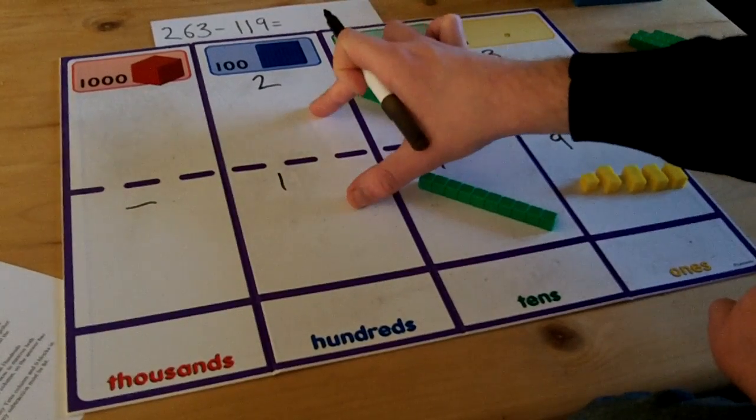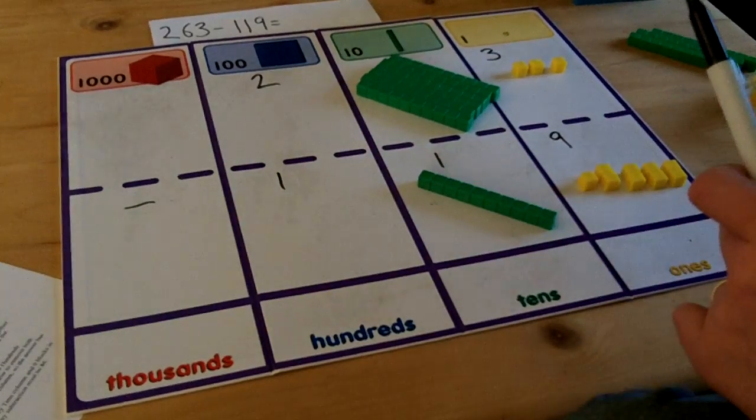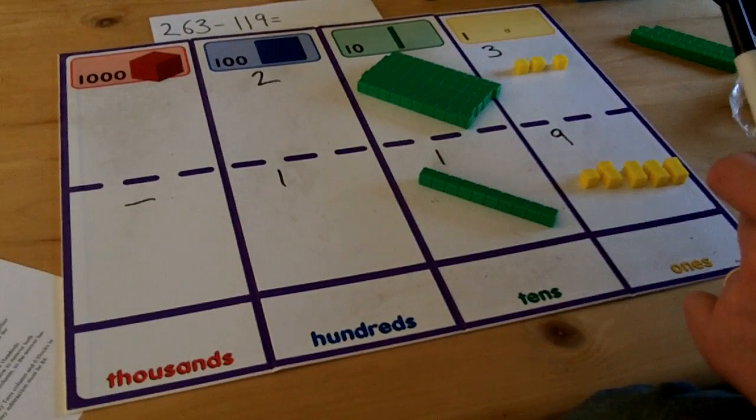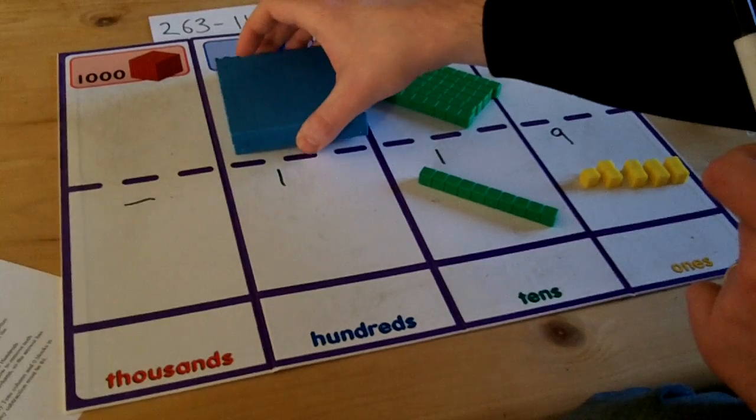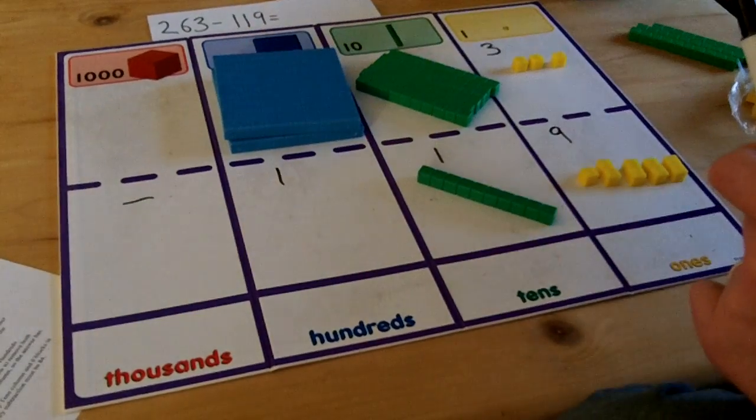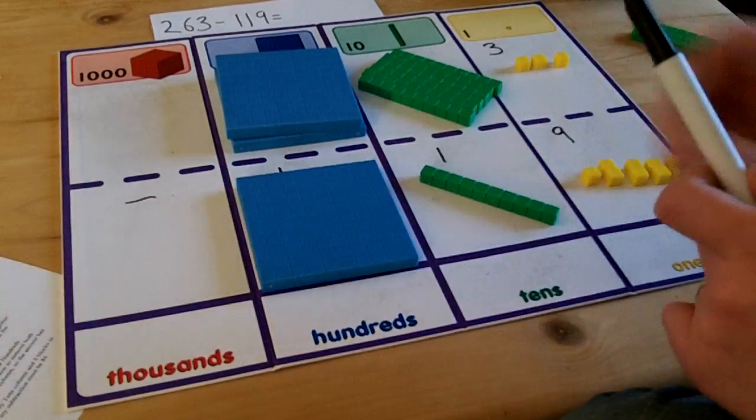Finally, in the hundreds column I have got 200 and 100. This means I must use the blocks of 100 cubes, so I'm going to put two on top of the 200 and one on top of the 100.